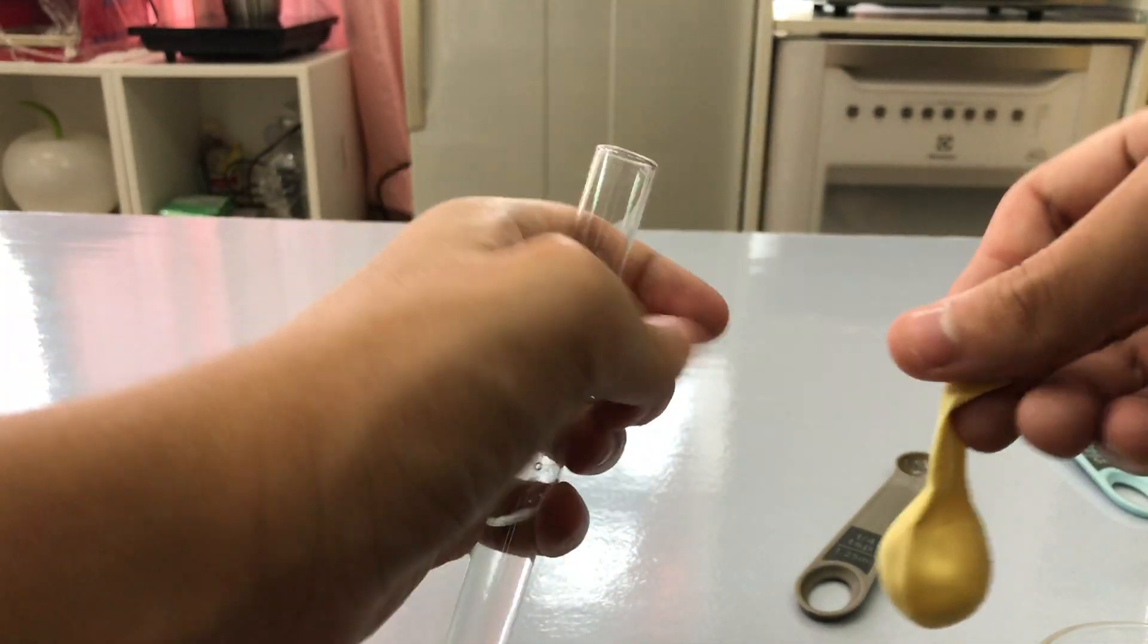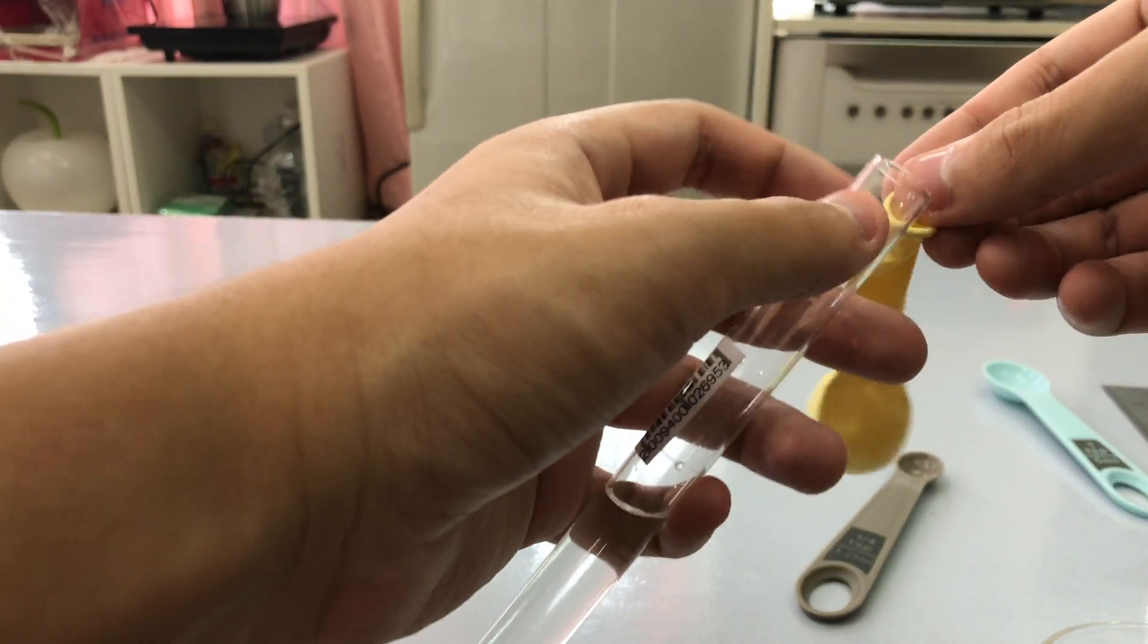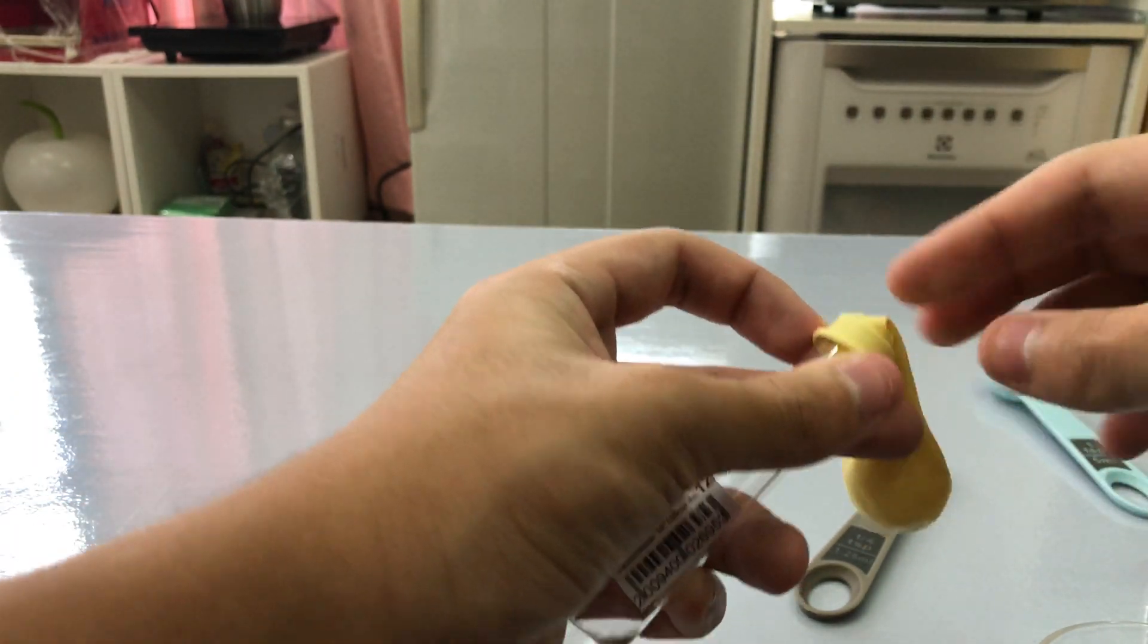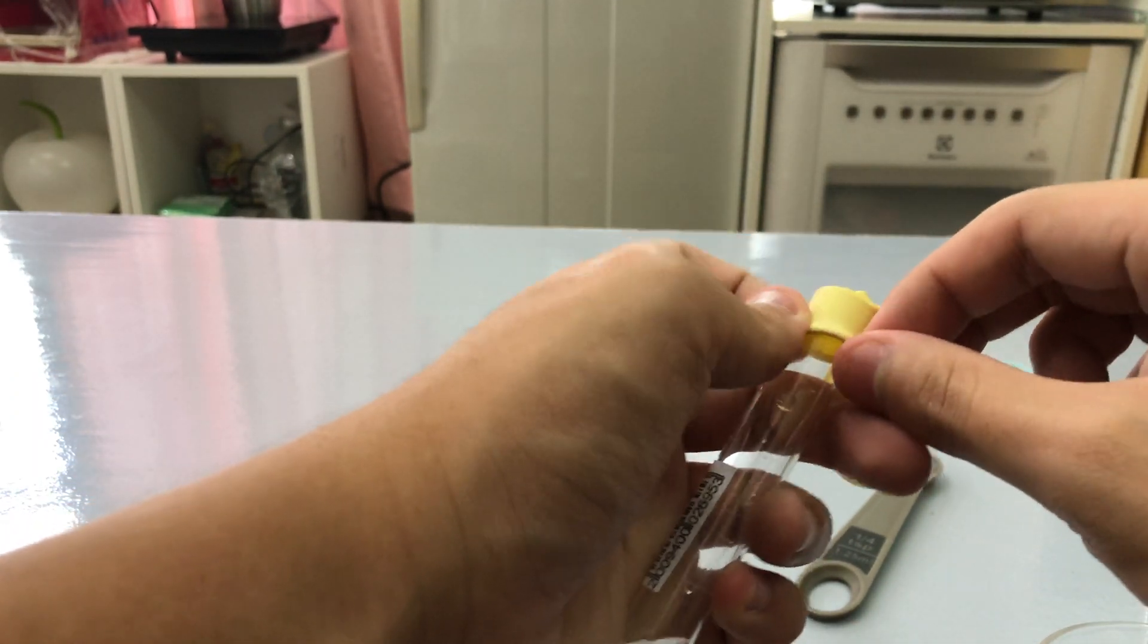Next step, we use the balloon that already has the sodium bicarbonate inside and make sure that the sodium bicarbonate does not flow inside the test tube.